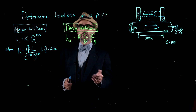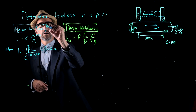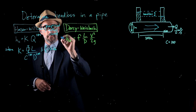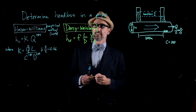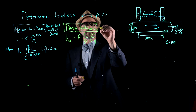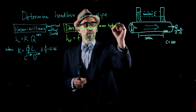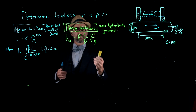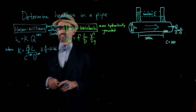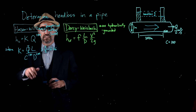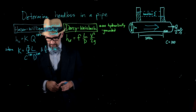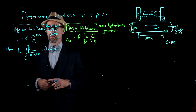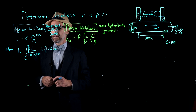First, we'll solve for head loss using the Hazen-Williams method, which is a more empirical method and is only for water — important to remember. Second, we'll calculate head loss using the Darcy-Weisbach method, which is more hydraulically grounded. We'll use the Moody diagram and Reynolds number in the Darcy-Weisbach equation. Using the Hazen-Williams equation: HL equals K multiplied by Q to the exponent 1.85, where K equals omega multiplied by L, all over C to the 1.85 multiplied by D to the 4.87.